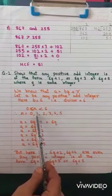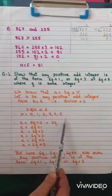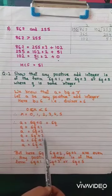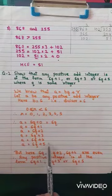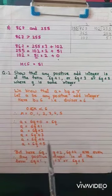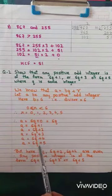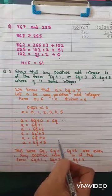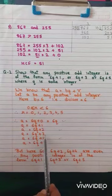Since divisor is 6, remainder can be 0, 1, 2, 3, 4 or 5. That means a can be 6q, 6q plus 1, 6q plus 2, 6q plus 3, 6q plus 4, or 6q plus 5. Now, 6q, 6q plus 2, and 6q plus 4 are even. While 6q plus 1, 6q plus 3, and 6q plus 5 are odd. Since our question is about odd integers, we only consider odd ones. So the answer is in the form of 6q plus 1, 6q plus 3 and 6q plus 5.